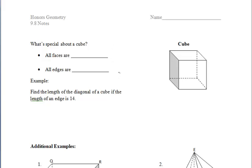In the second set of notes in section 9.8, we're going to first take a look at a cube and then do some additional examples. Using prior knowledge, let's think about a cube. What's special about it? A cube is made up of six congruent squares. So that means that all faces of this figure are congruent. And likewise, all edges are also going to be congruent.